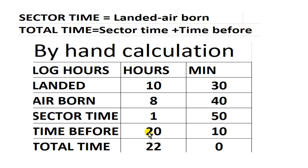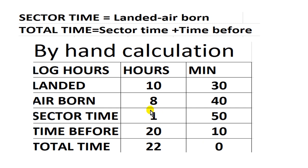Now for the total time, let's say the time before is 20:10. Add minutes first: 50 plus 10 equals 60 — that means one hour with zero remaining minutes. We carry one hour: 1 plus 1 equals 2, plus 20 equals 22. So the total time is 22:00. That finishes the manual calculation.